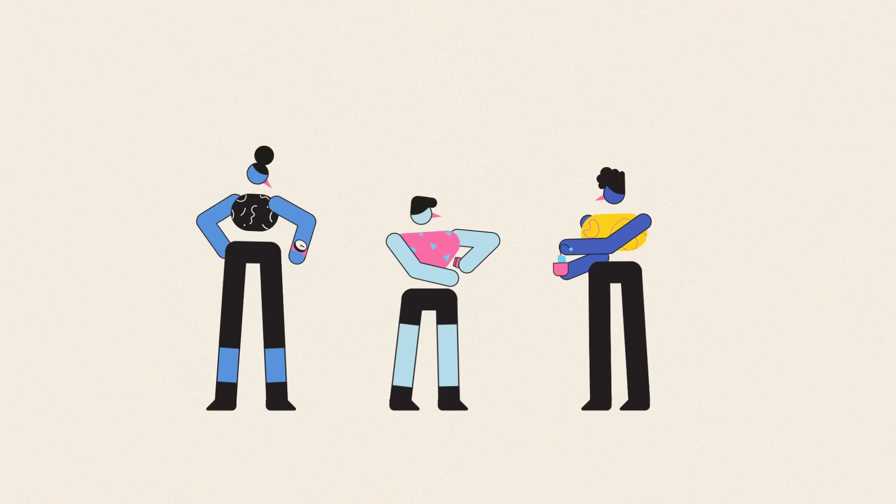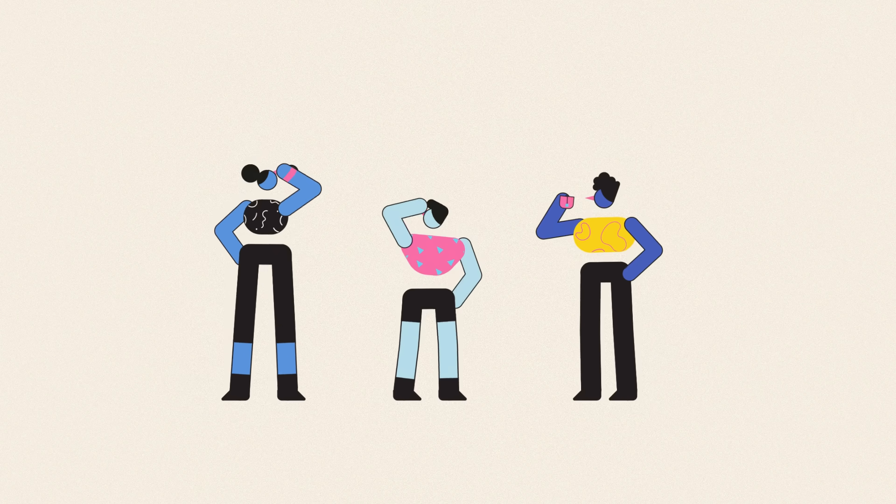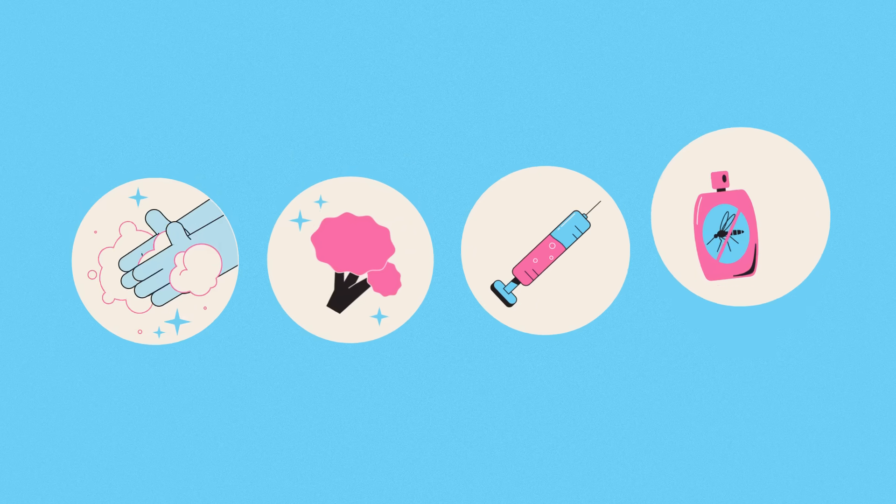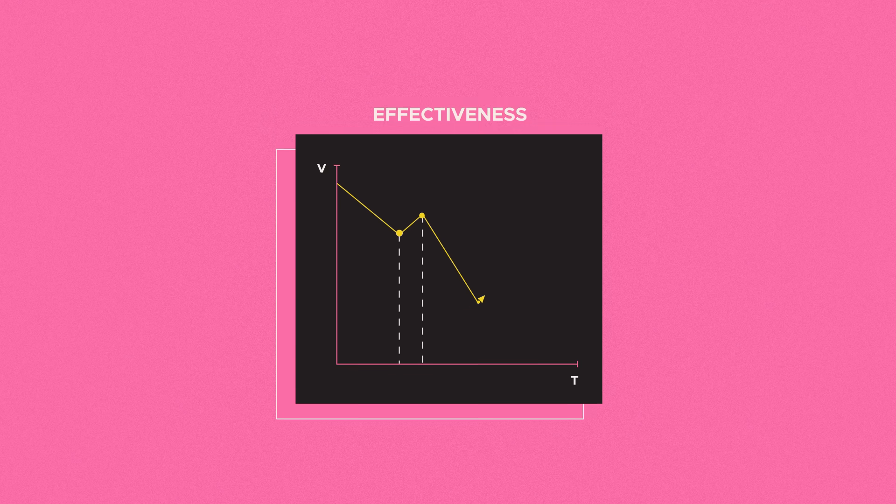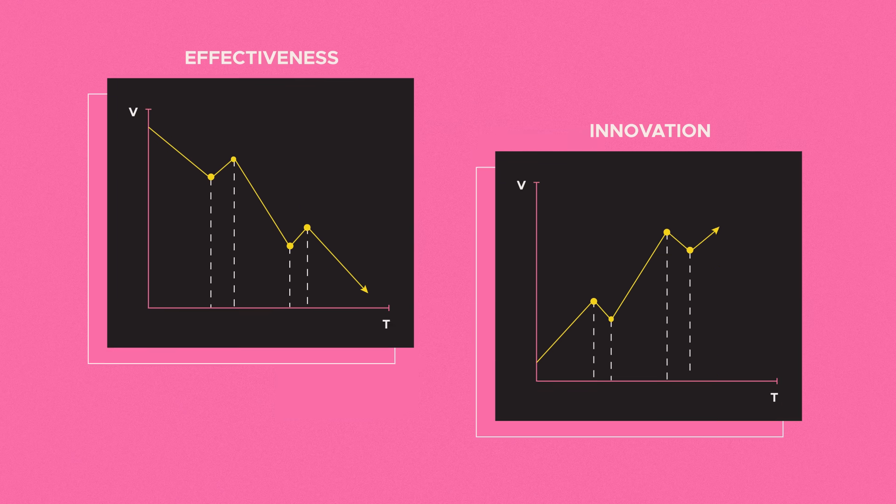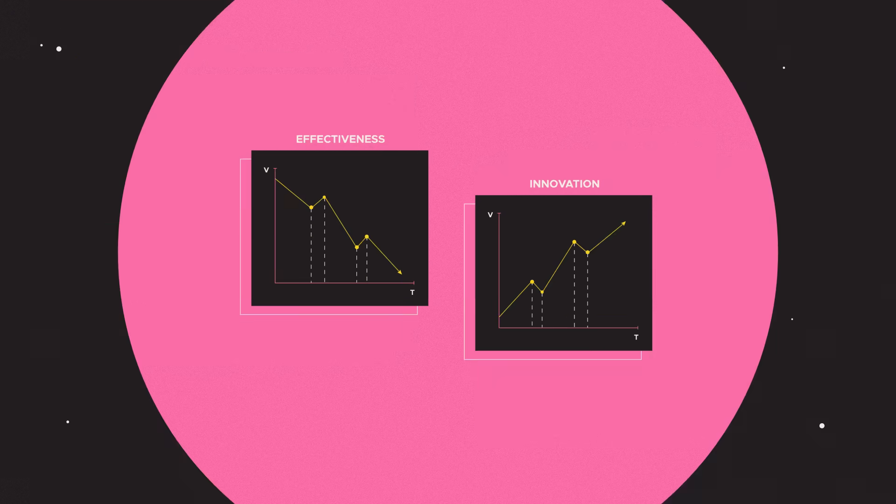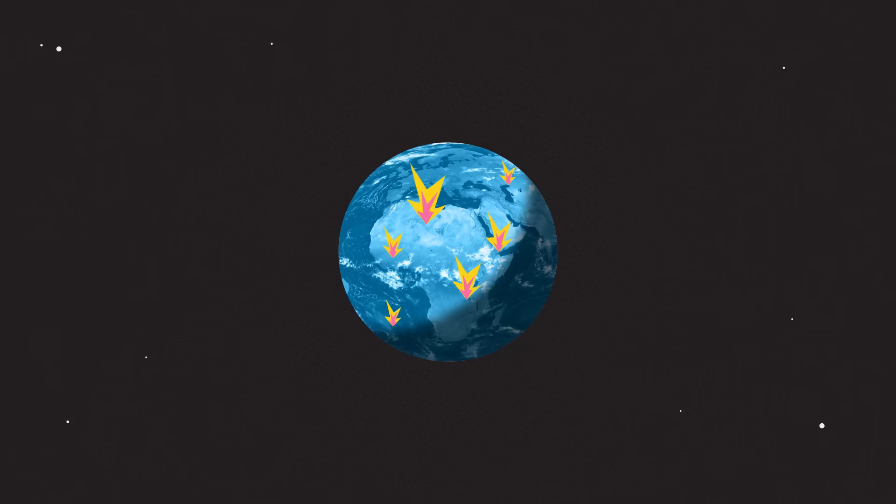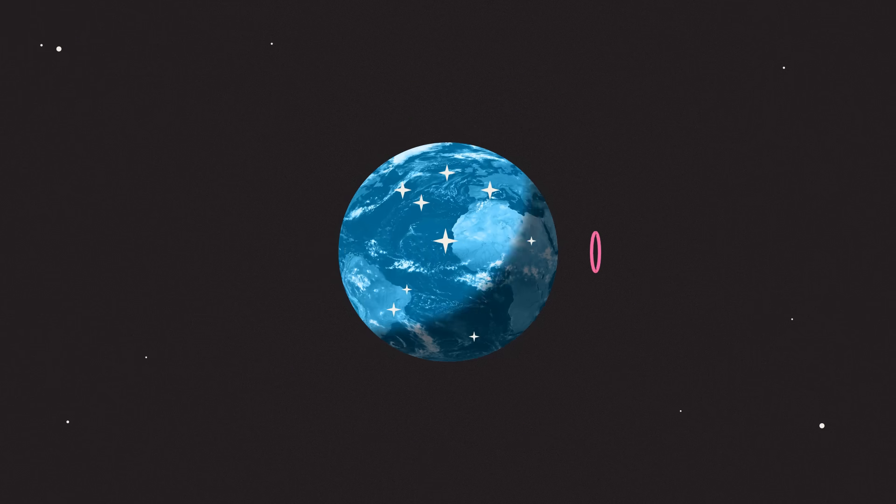We have a responsibility to one another to treat antibiotics as a precious resource, use them wisely, and do what we can to prevent infections in the first place. If we can slow the rate at which antibiotics are becoming ineffective while upping the pace of innovation in antimicrobial therapies, we can sidestep the doomsday scenarios and reach a future where antibiotics are just one of many ways we keep diseases in check.